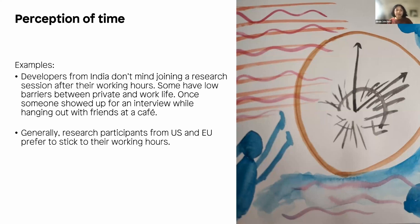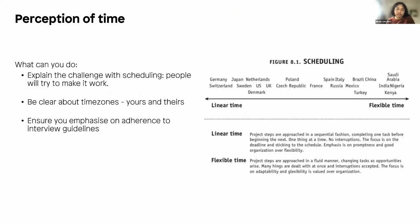She also mentioned that once someone showed up for an interview while hanging out with friends at a café. It's easy to get frustrated and judge, but again, there are different cultural contexts — they showed up to help with your research. Generally, research participants from the US and EU prefer to stick to working hours, so scheduling across time zones can be challenging. Her suggestion: explain the challenge — people will try to make it work. And be clear about time zones, both yours and theirs.